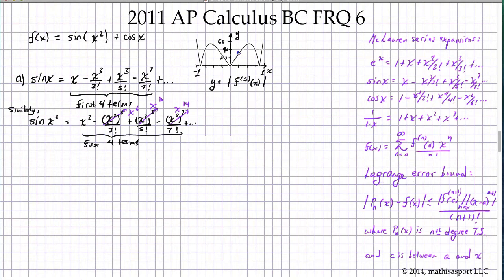Part B asks a similar question for cosine x. First, we're going to write the first four non-zero terms of the Taylor series for cosine x. Again, this is something we simply have memorized. Now, having done this, notice what we've done. We first created the Taylor series for sine of x squared. Now, they've asked us to create the Taylor series for cosine of x. And so, by combining the two, we can start to get the first several terms of the Taylor series for this combined function.